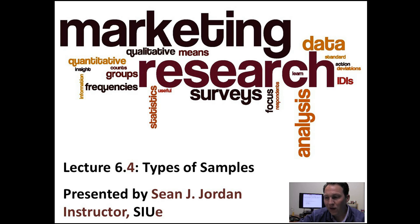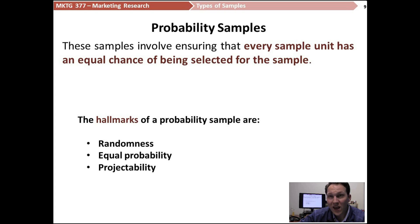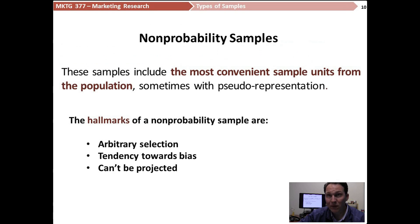Probability samples are really the ideal sample we're going to draw in any sort of research. Their key hallmarks really involve randomness — making sure that sample units are selected through some random means — an equal probability of being selected, and projectability. Because we have randomness and equal probability of being selected, we can project the findings to the population as a whole. That's what a probability-based sample is all about.